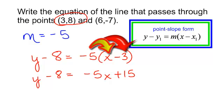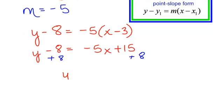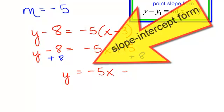Now, did your teacher tell you to get it in slope-intercept form? Well, if she did, get y by itself. That means I am adding 8 to both sides. And I will get y is equal to negative 5x plus 23. And I am done.